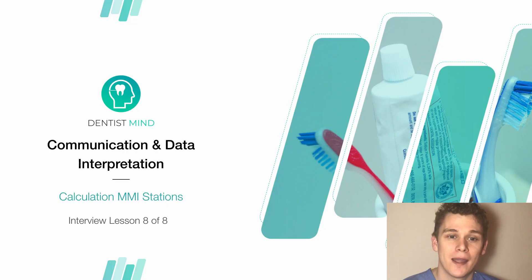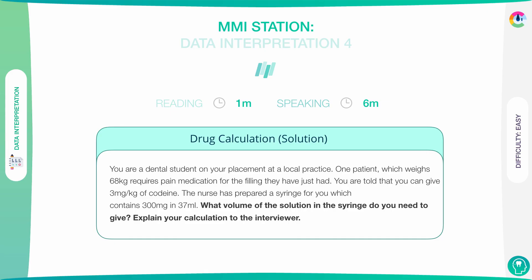Calculation MMI interview stations — Interview Lesson 8. You're a dental student on your placement at a local practice. One patient who weighs 68 kilos requires pain medication for the filling they've just had. You're told that you can give 3 milligrams per kilogram of codeine. The nurse has prepared a syringe for you which contains 300 milligrams in 37 ml. What volume of the solution in the syringe do you need to give? Explain your calculation to the interviewer.